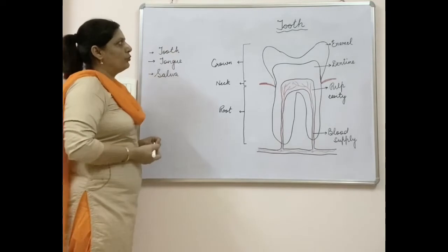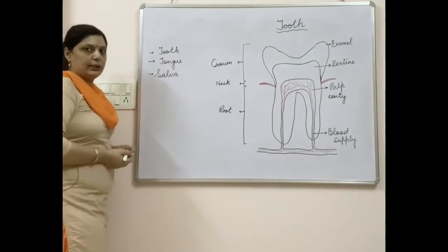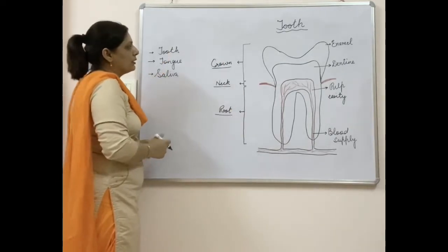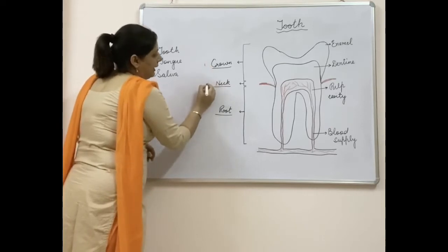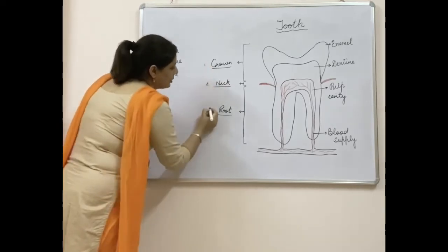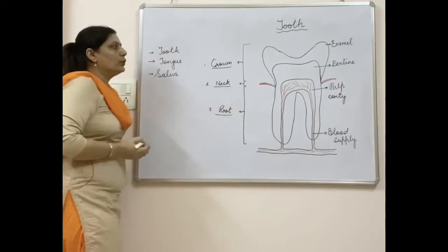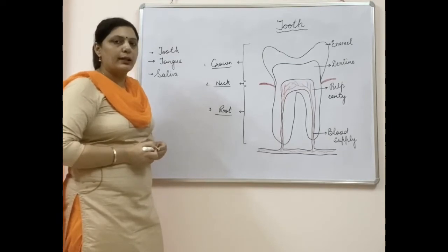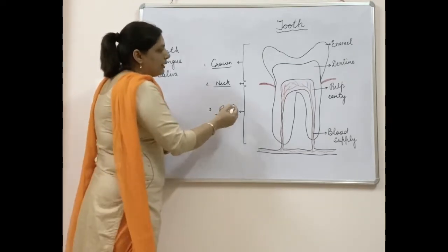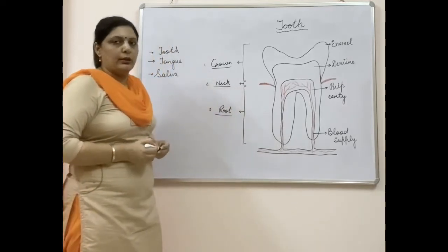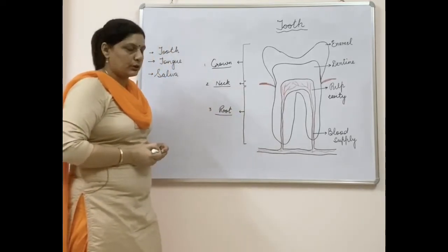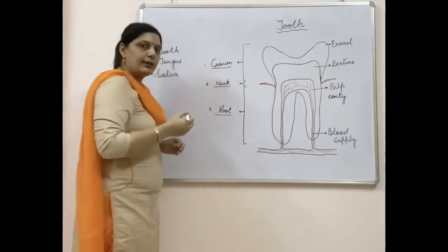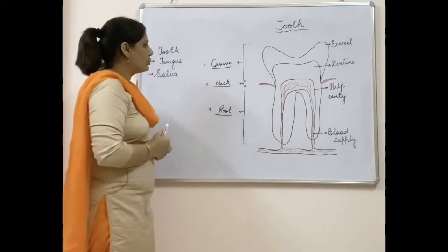First we will read about the tooth in detail. The structure of tooth has three parts: crown, neck, and root. The crown is the part which is above the gums — the part which is visible. The root is the part embedded in the jaw, and the neck is the part between the crown and root, embedded in the gums.